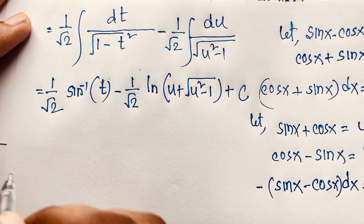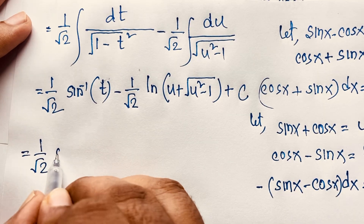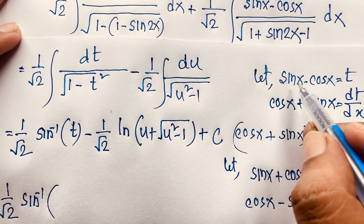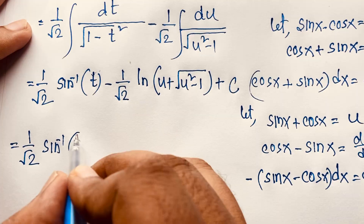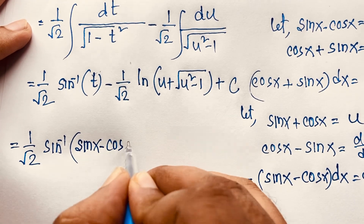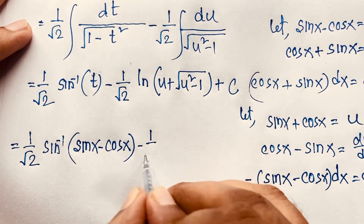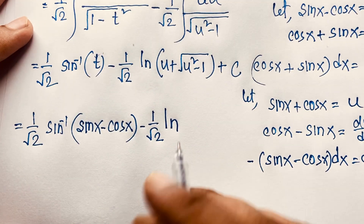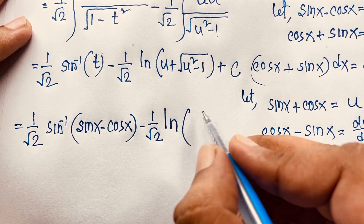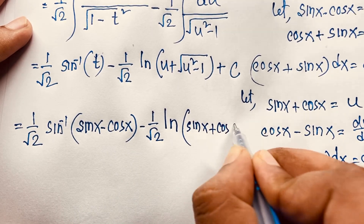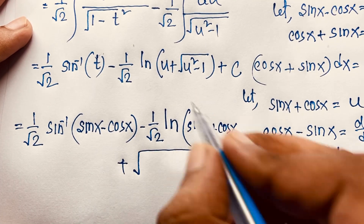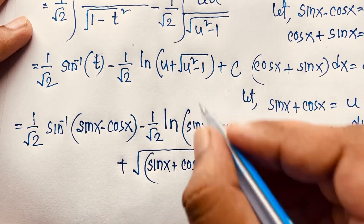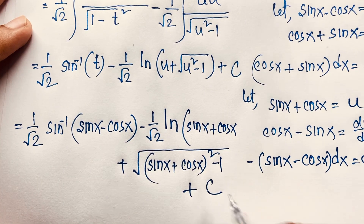Substituting back t = sin x − cos x and u = sin x + cos x, we get the final answer: 1 over square root 2 times sin⁻¹(sin x − cos x) minus 1 over square root 2 times ln|sin x + cos x + square root((sin x + cos x)² − 1)| + C.